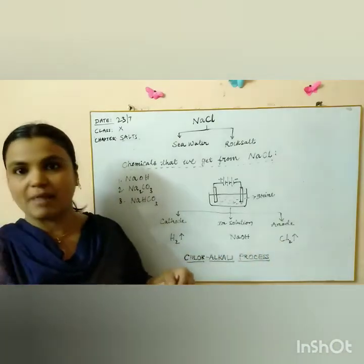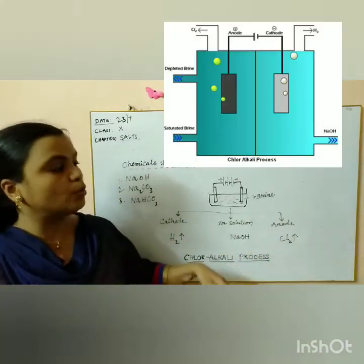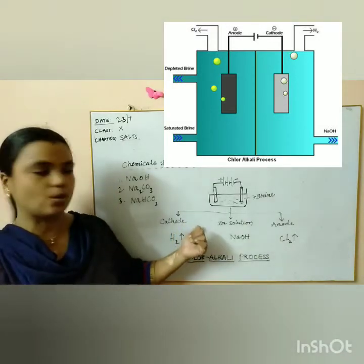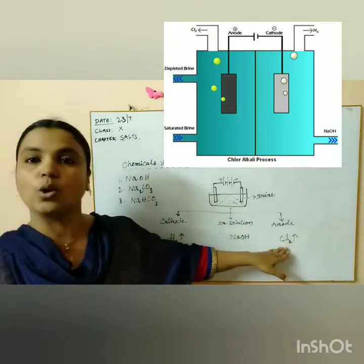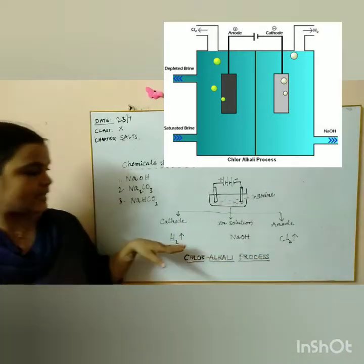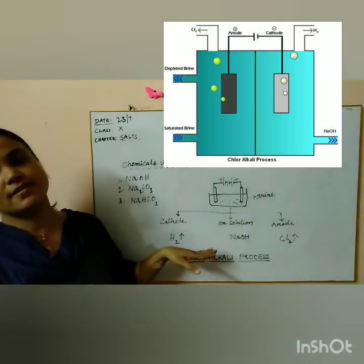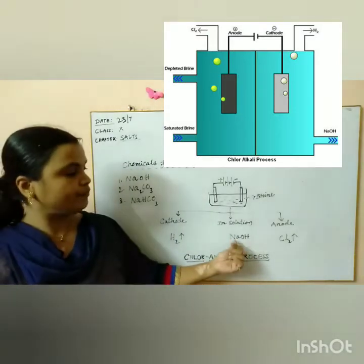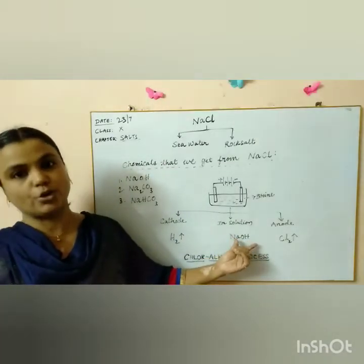Because chlorine, Cl minus, they are anions. They move towards anode. H plus cations, they move towards cathode. So at anode, chlorine gas is collected and at cathode, hydrogen gas is collected. And in the solution, what we get is nothing but NaOH, sodium hydroxide.